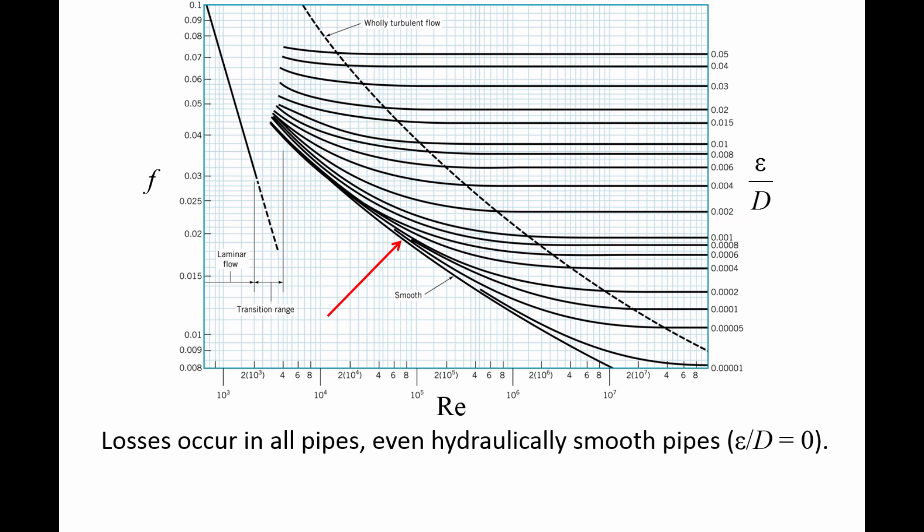It is important to remember that frictional losses occur in all pipes, even if they are hydraulically smooth and have very small relative roughness values. Pipes made of glass and plastic are examples of pipes that are hydraulically smooth. For these types of pipes, the friction factor is found using the lowest curve on the Moody chart.